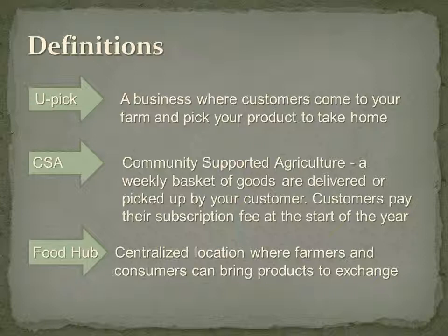Some business types: U-pick — I can still remember going with my grandparents to the strawberry farm in Montrose, Iowa. We'd take a bunch of tubs, go out and pick strawberries, and pay based on weight. So people come to your farm and pick the product. That's appealing to me because picking is probably my least favorite job in the garden, so I'm very happy to let people come out and pick. My favorite model for a small farm is a CSA — Community Supported Agriculture.